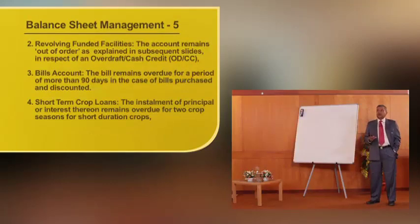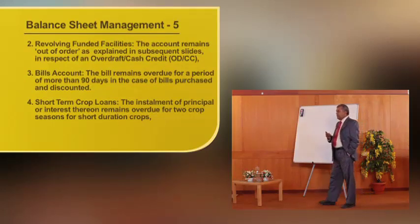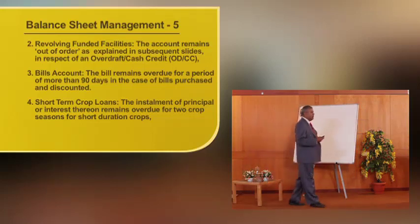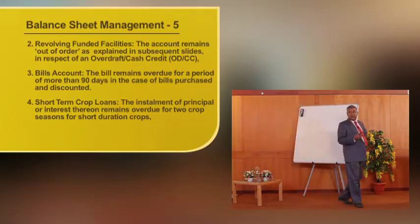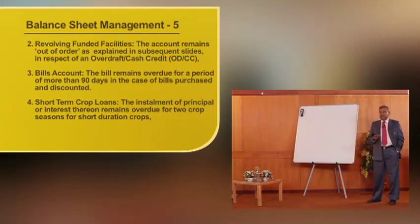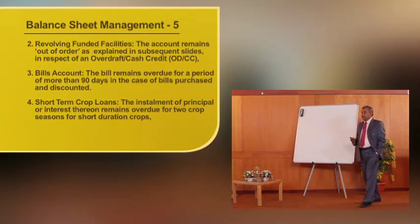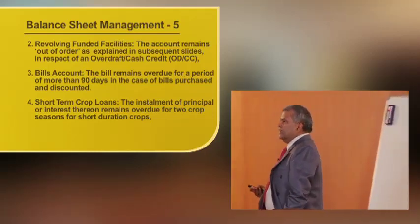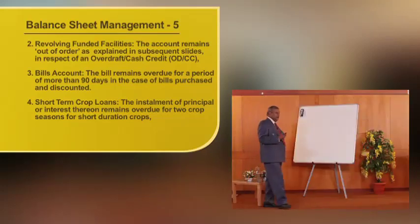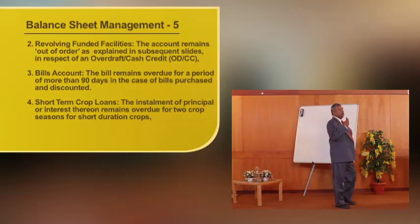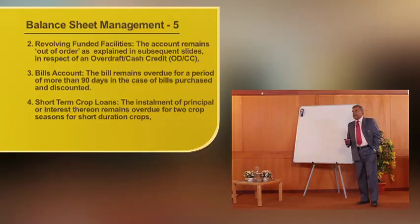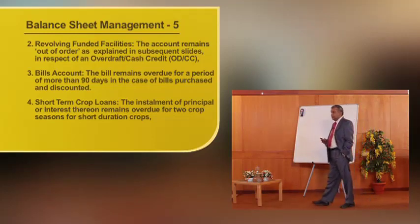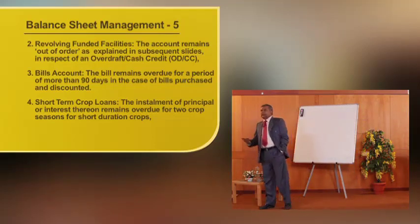Term loans are a funded facility repaid over time. Then there are facilities like cash credit and secured overdraft which revolve around a limit — called revolving funded facilities. These accounts become NPA when they remain out of order. The moment an account becomes out of order, facilities such as cash credit, pledge, hypothecation, or secured overdraft slip into NPA.